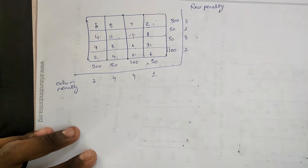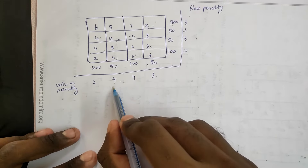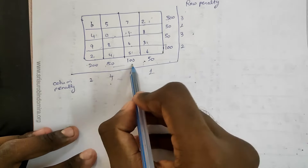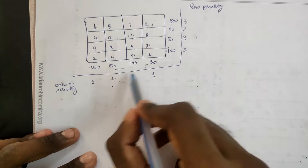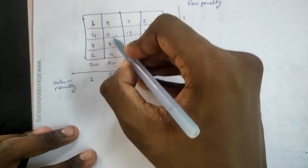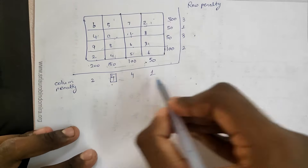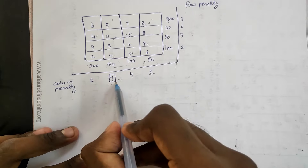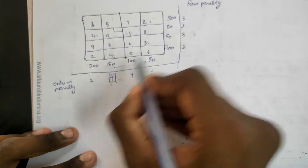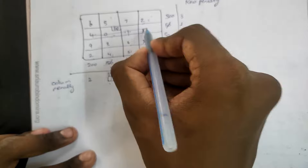So, we look at row 4 and column 4. We identify the highest penalty. If you have two equal penalties, you cannot allocate to both. If you have a row penalty, the highest penalty is selected. That is the first allocation — 50 is allocated. 50 is added and 100 is added. This is the first step.